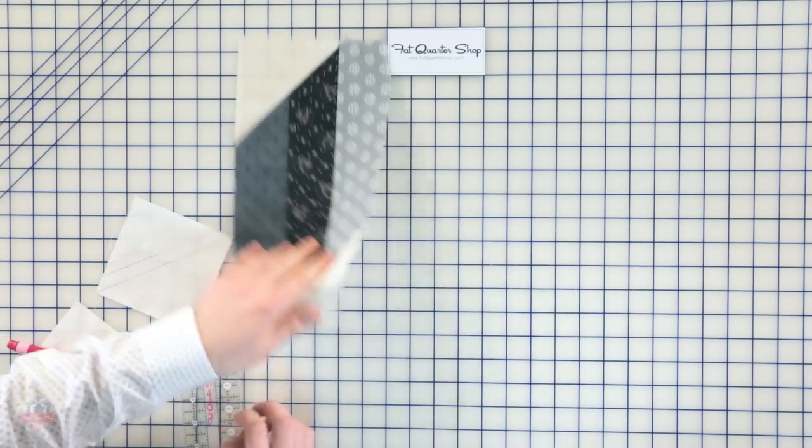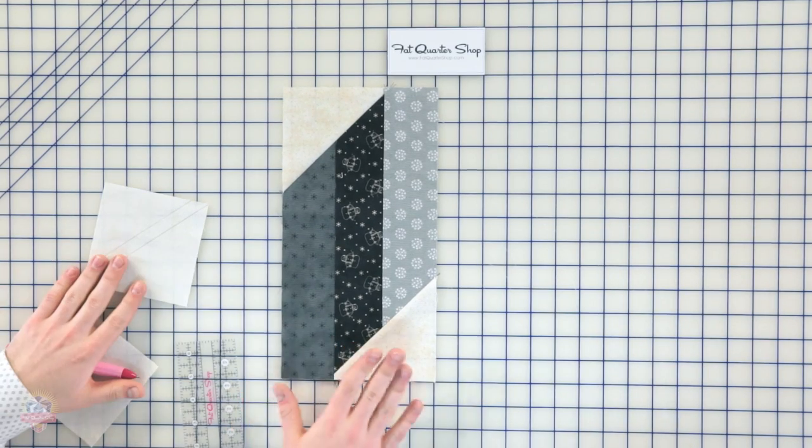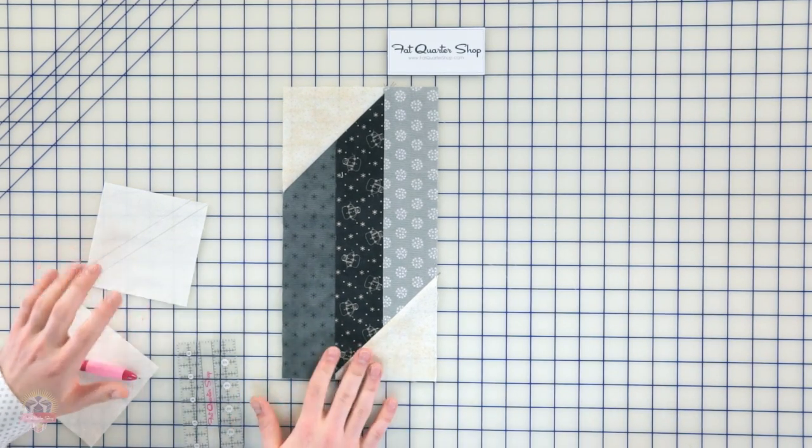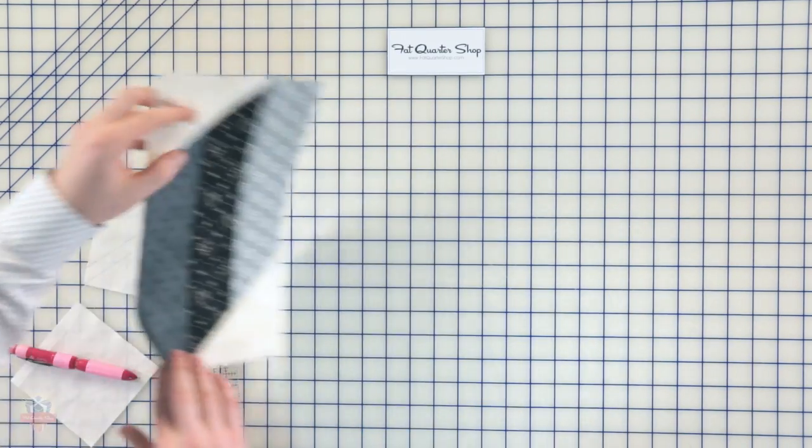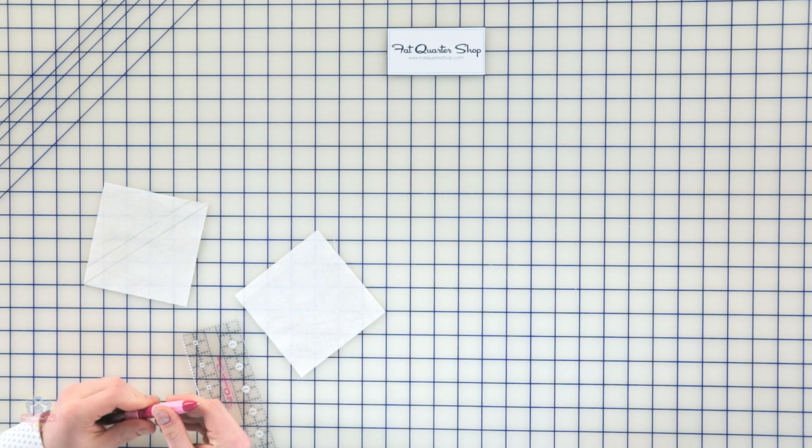Well Kimberly, the whole Winter Frost quilt behind us is made using one block. It's really simple with one block. There's not too many different things that you have to do. What we're gonna start with is four and a half inch background squares, a ruler, and just a marking pencil.